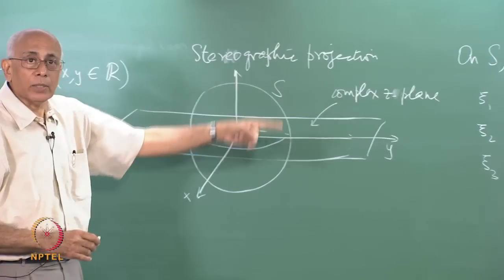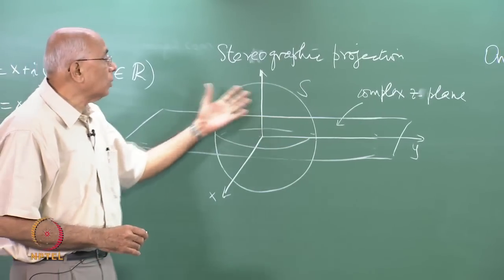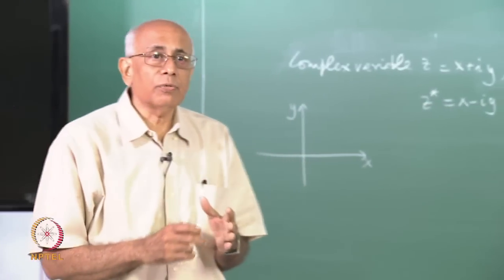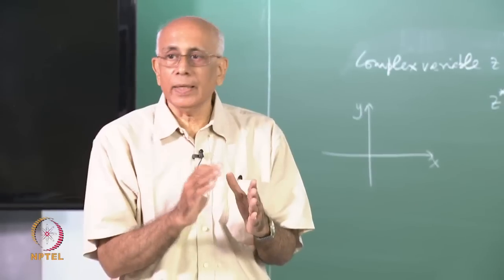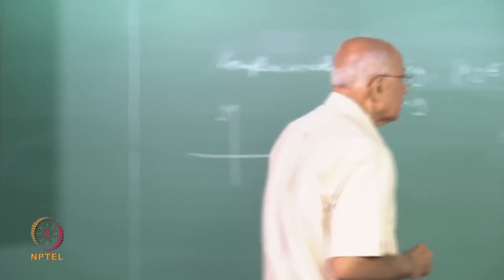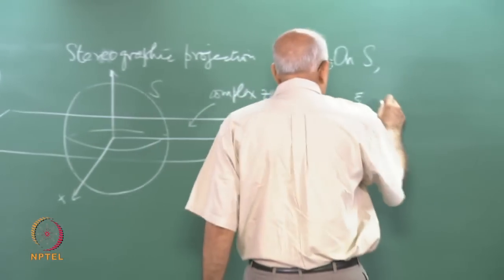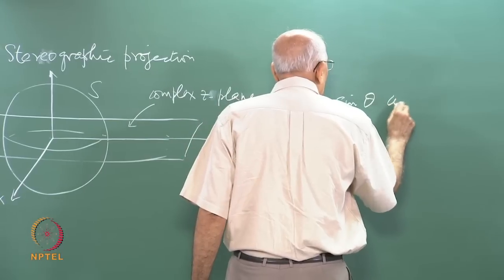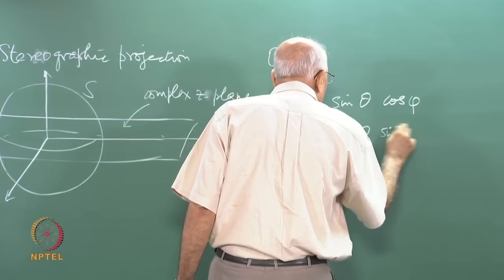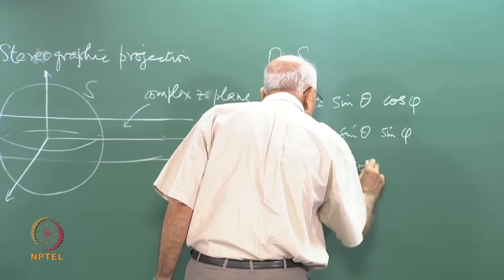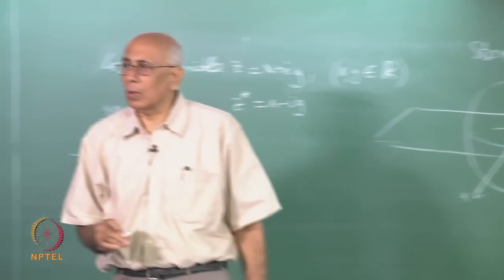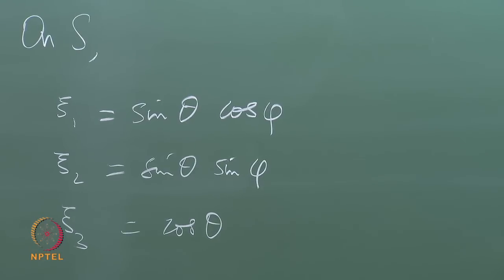In terms of angular coordinates on this sphere, we define a polar angle theta (the co-latitude) and an azimuthal angle phi. Then psi one equals sin theta cos phi, psi two equals sin theta sin phi, and psi three equals cos theta — just spherical polar coordinates on the sphere.